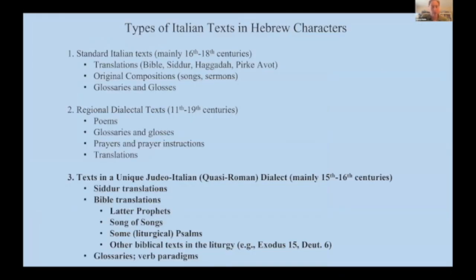There's a third category of Judeo-Italian texts, which I think are the most interesting — texts composed in a unique Jewish dialect. This corpus includes complete translations of about half a dozen sidurim prayer books, a translation of the latter prophets of the Bible, some other biblical books, the Song of Songs, a handful of Psalms, and other smaller texts. The language of this third category seems to have been some sort of literary dialect popular among Jews for about a century or two in the 15th and 16th centuries. This dialect shares most of its features with the dialect of Rome, with some other features typical of other southern Italian dialects, but it was still uniquely Jewish.